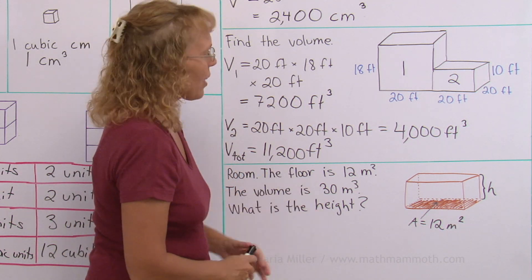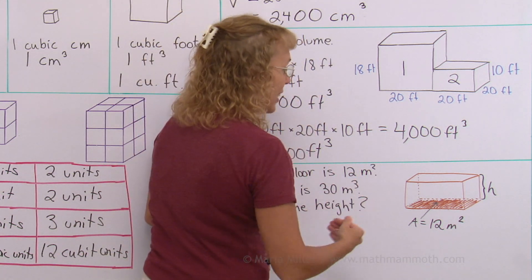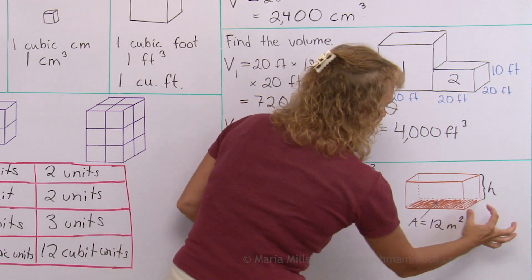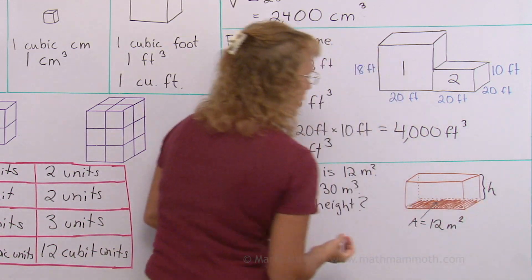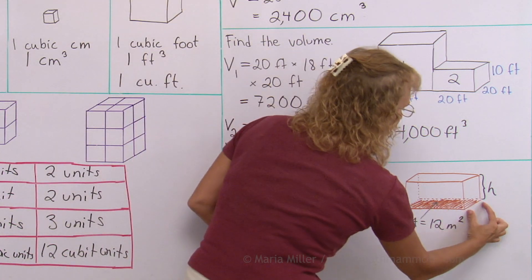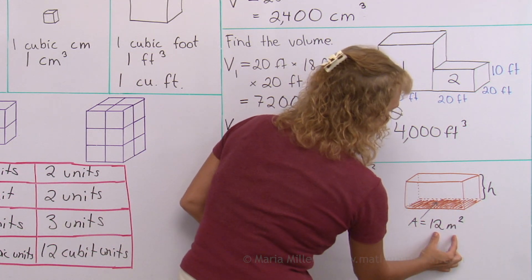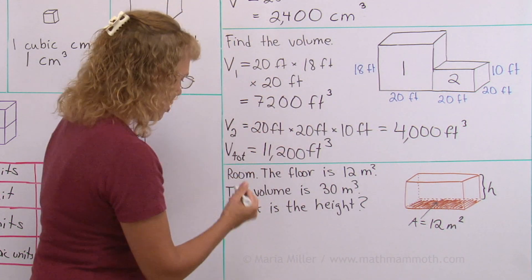We know the volume. And now you need to keep in mind that the volume is calculated by multiplying the three dimensions. This times this times the height would give us 30 cubic meters. Now this times this is the area, okay? So this times this is 12 square meters. So therefore,